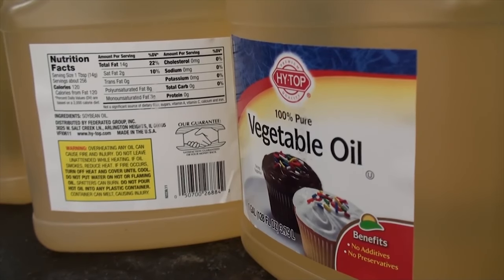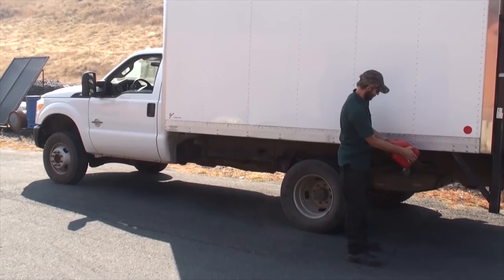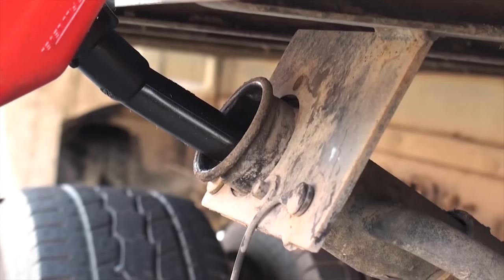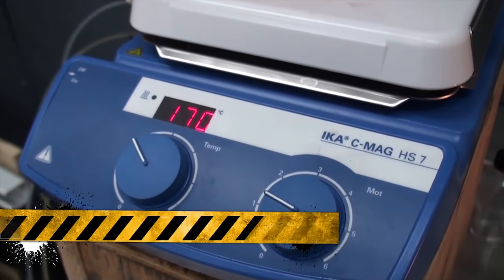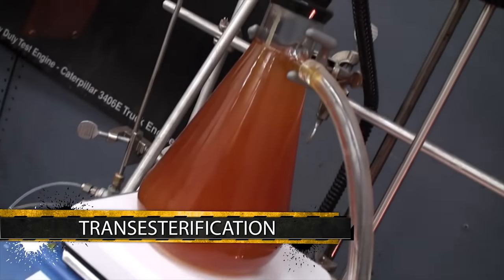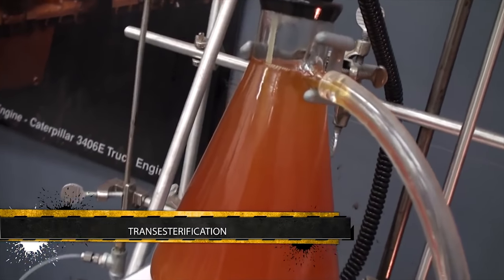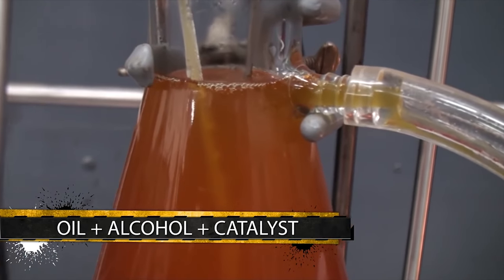To make biodiesel, you remove the impurities from the fat or oil and change its viscosity so that it can burn in a normal diesel engine without mucking up the fuel lines. You do that through a chemical reaction called trans esterification. Trans esterification is the biodiesel making process and is simply a reaction of the vegetable oil and alcohol using a catalyst to speed the reaction.